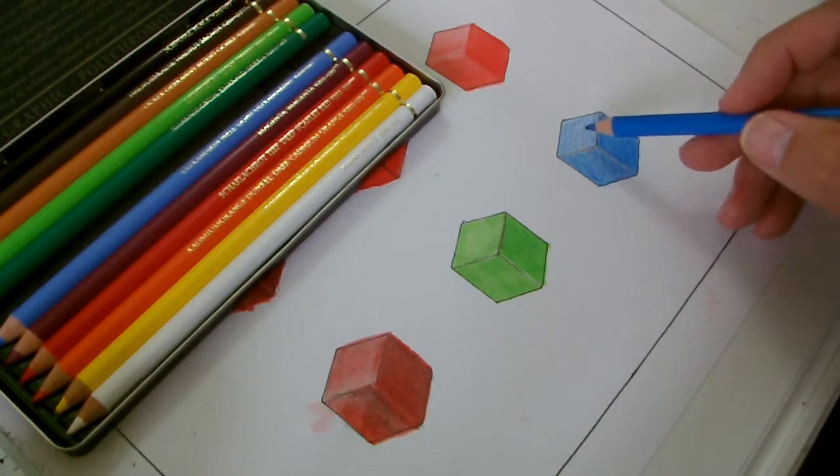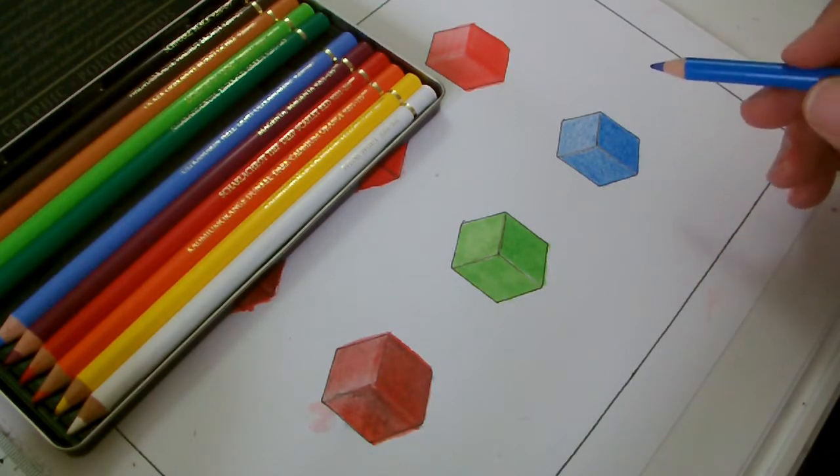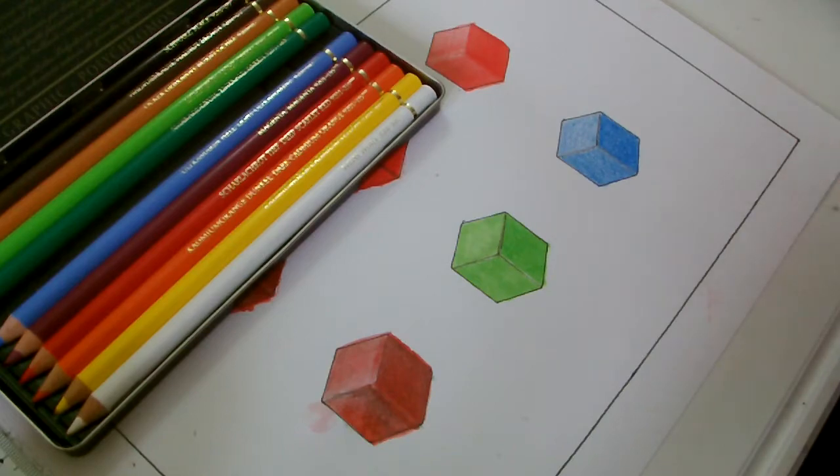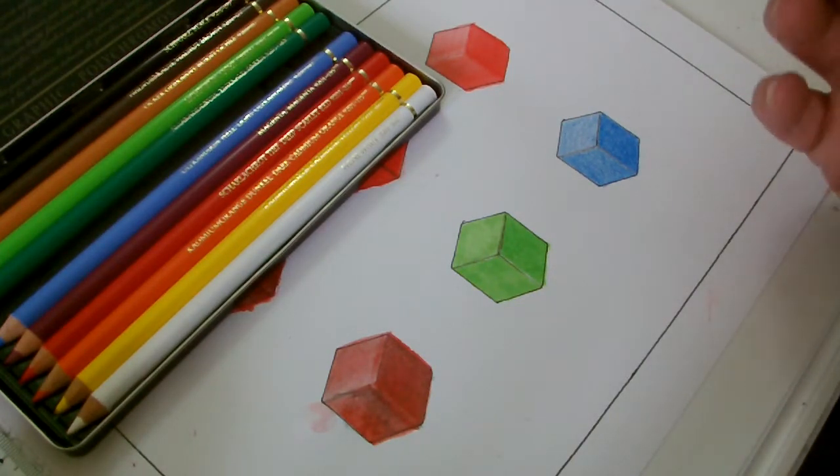As you can see now, we've got the lightest, mid-tone and darkest side. Now I haven't applied heavy pressure with a pencil. Now, if I apply heavy pressure, we then get into the realms of burnishing. Now burnishing gives that a look of something that's more painted. It's a bit enamel looking, more vibrant, more stronger color, more opaque.